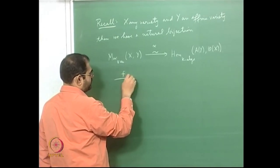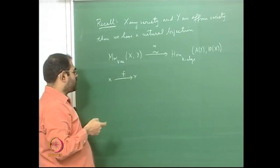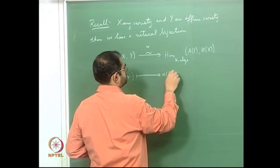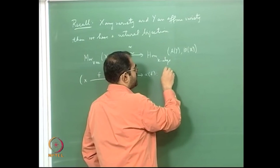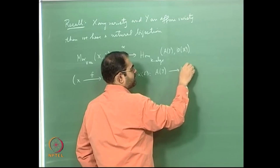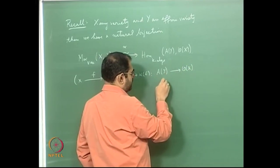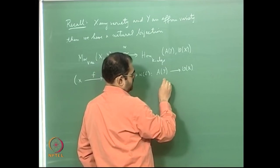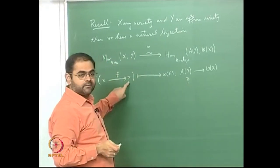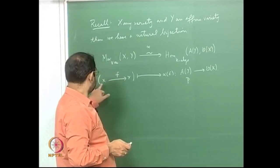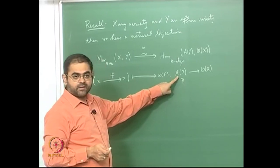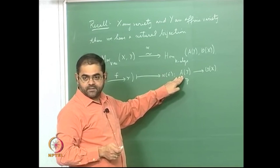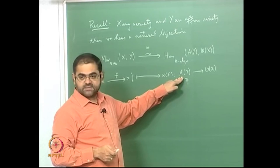In other words, if f from x to y is a morphism, then alpha(f) is a k-algebra homomorphism from the ring of polynomial functions on y to the regular functions on x. Given a polynomial function P on y, you compose it with f to get a regular function on x. Note that A(y) is the affine coordinate ring of y — it is just polynomials restricted to y.